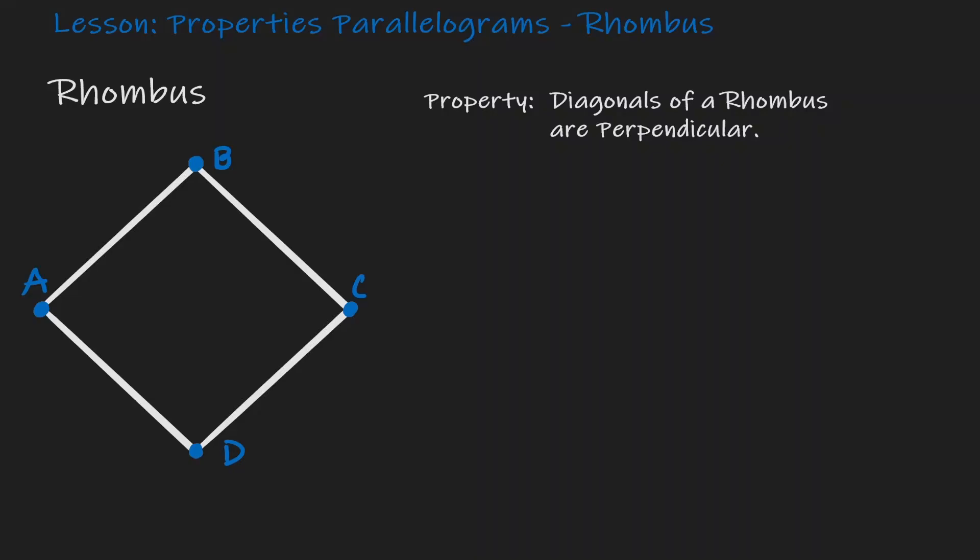Welcome. Today we'll be looking at properties of parallelograms and we're going to concentrate on the figure of a rhombus. The first property that we want to show is that given a rhombus, diagonals in a rhombus are going to be perpendicular to each other.